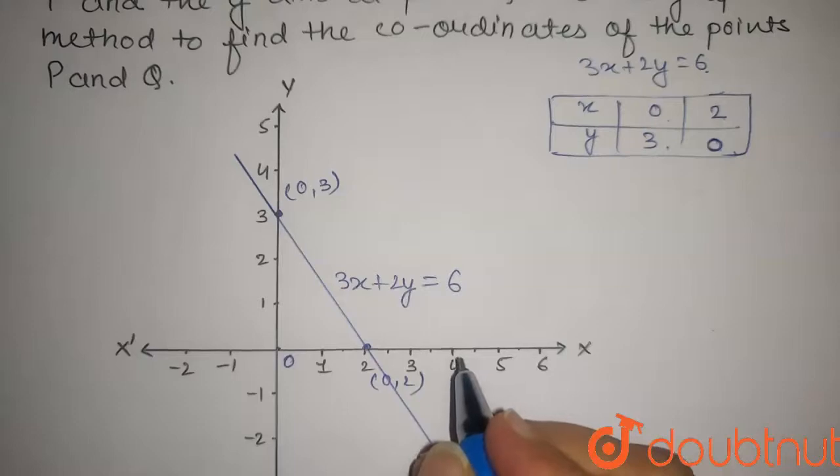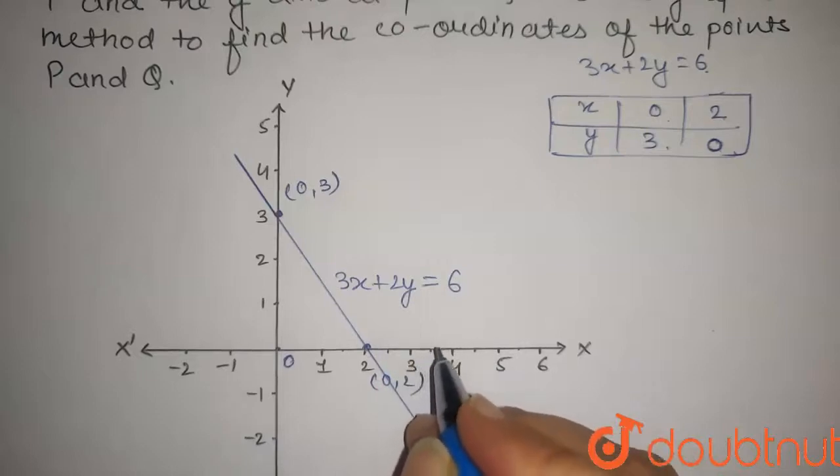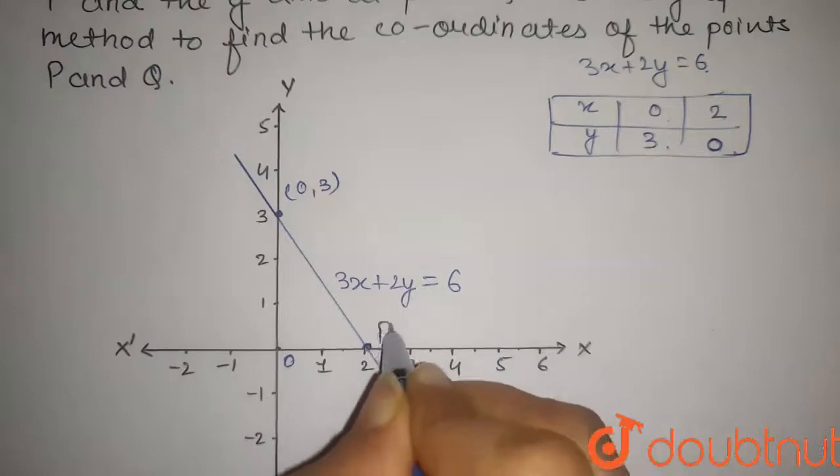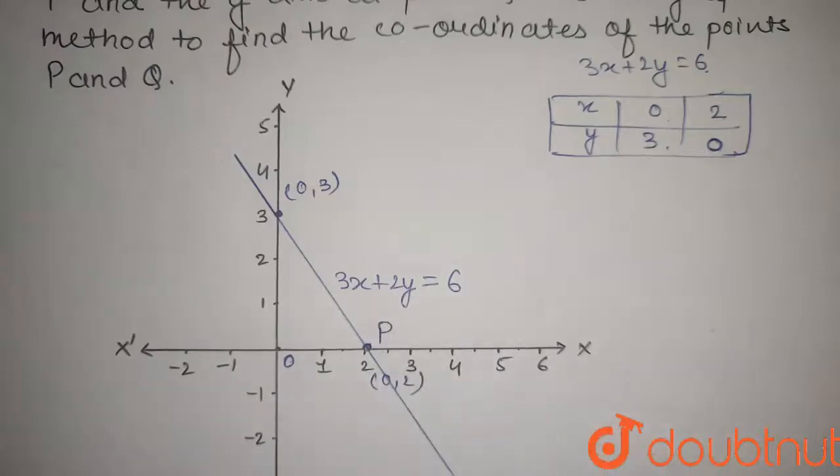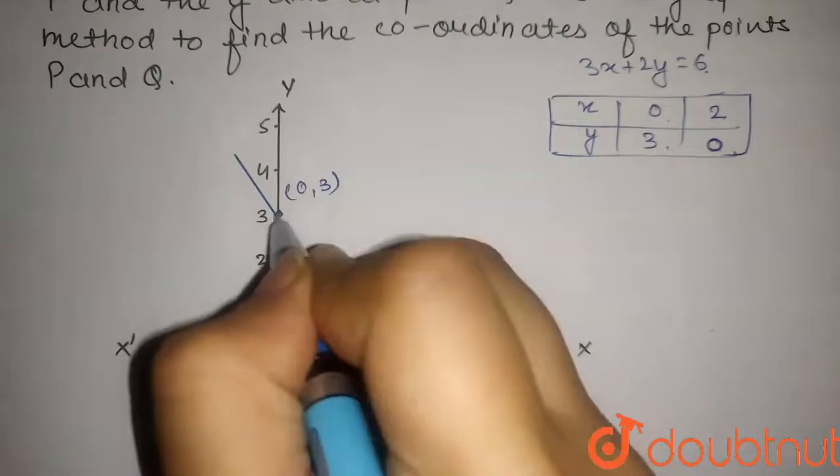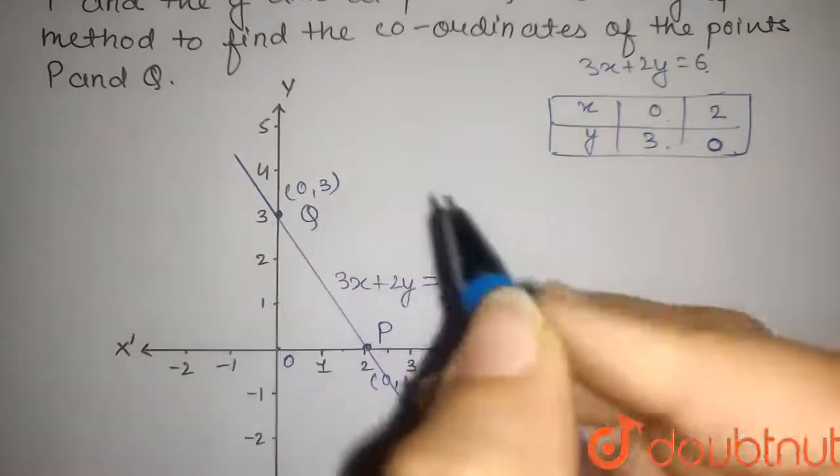The question states that this graph meets the x-axis at point P, so this will be point P, and the y-axis at point Q, so this point will be Q.